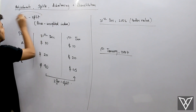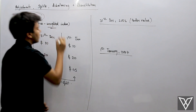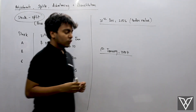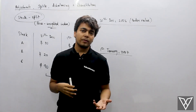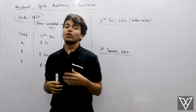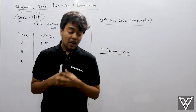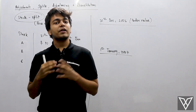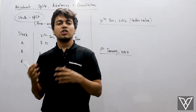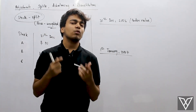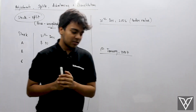So first of all, we will see stock split's effect on price-weighted index. So price-weighted index, as you all know, importance is given to the price and accordingly the index value is calculated. If a stock split is happening, then how will the value of the price-weighted index change, or what adjustment will we need to make, we will understand that.